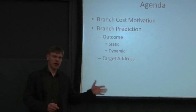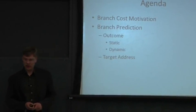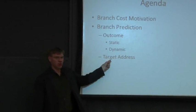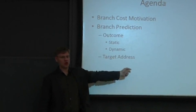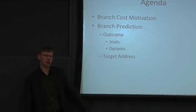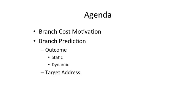But that's only half of the story. Today we're also going to talk about figuring out where you actually go when you take a branch. And when I say branch, we're going to loosely put all forms of control flow into this — so it's not just a branch, it's a branch, a jump. You might even think about trying to include something like an interrupt, because that changes your control flow. But most people try not to predict interrupts.